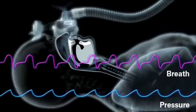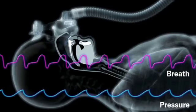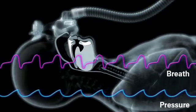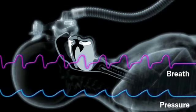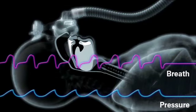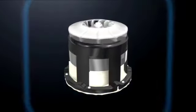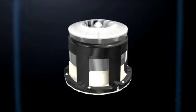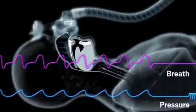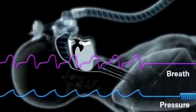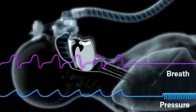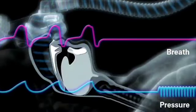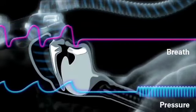ResMed's enhanced Autoset Algorithm can detect whether an apnea is obstructive or central. The device generates small amplitude pressure oscillations that flow down the tube and into the mask. The algorithm compares this pressure to its flow response.